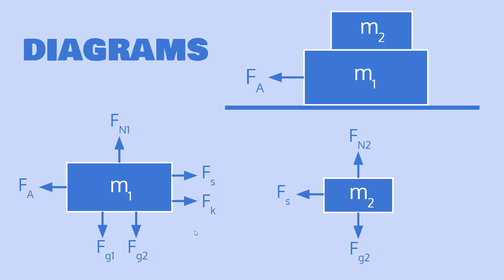The top block has fewer forces acting on it. We have the force of gravity, a normal force from the bottom block pushing up, and a force of static friction between the two blocks. Notice that this static friction is in the opposite direction compared to the static friction on the bottom block — that's because of Newton's third law: every action force has an equal and opposite reaction force. The top block tries to hold back the bottom block, while the bottom block tries to pull the top block along with it.